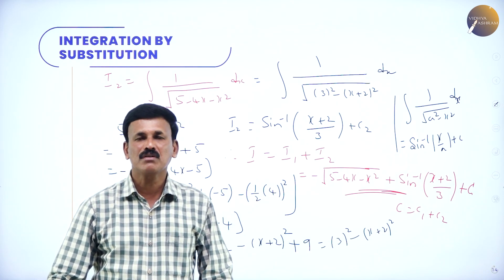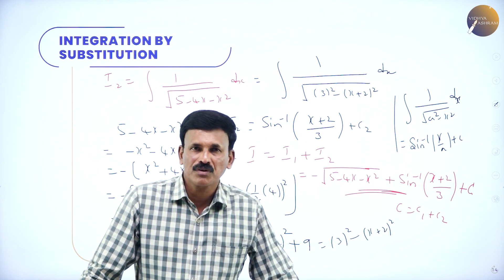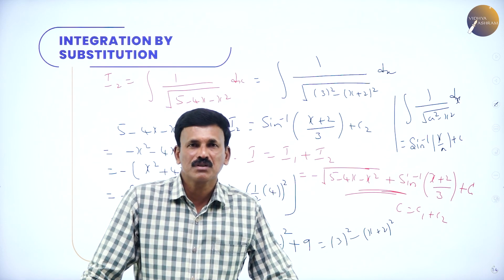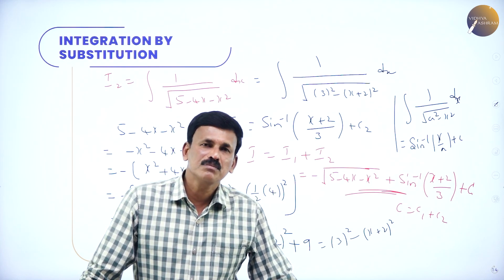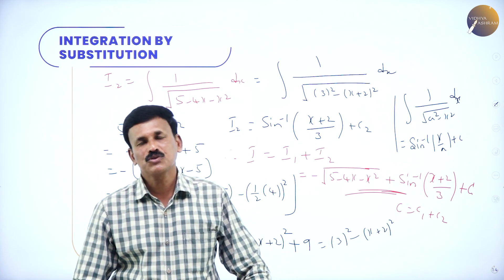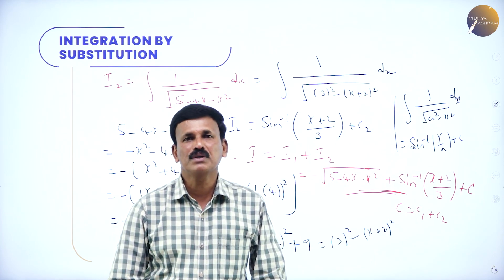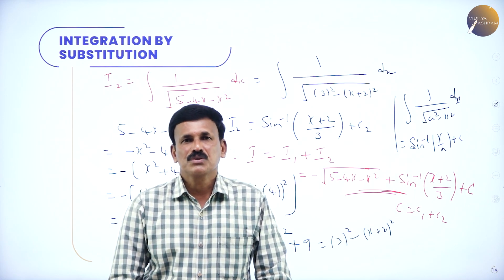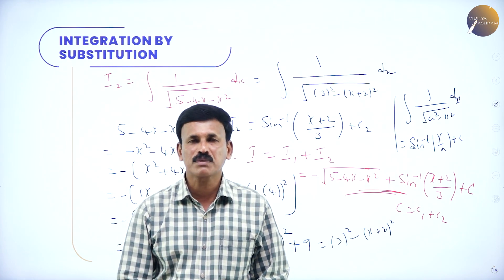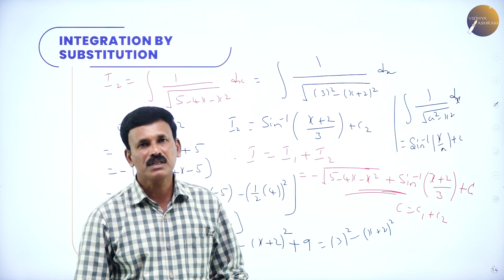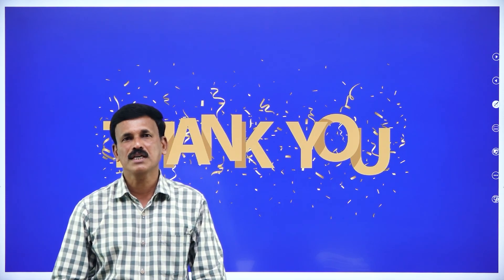This is how we evaluate all 4 types. Type 1: dx/(quadratic). Type 2: dx/√(quadratic). For these two, convert the quadratic using the completing the square formula. Type 3: (px + q)/(quadratic). Type 4: (px + q)/√(ax² + bx + c). Convert to some important integrals and evaluate. The key formula is (x + half × coefficient of x)² + constant − (half × coefficient of x)². Practice these — they are lengthy but easy. Thank you very much.